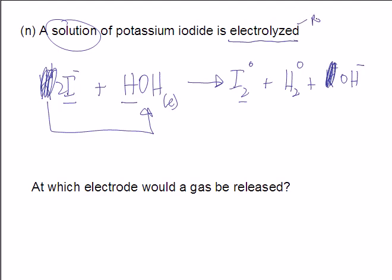Electrolyzation refers to redox happening. In this case, the I, 2I-, went to I2, zero, so that was oxidized. And the H+ went to H2, zero, that was reduced.